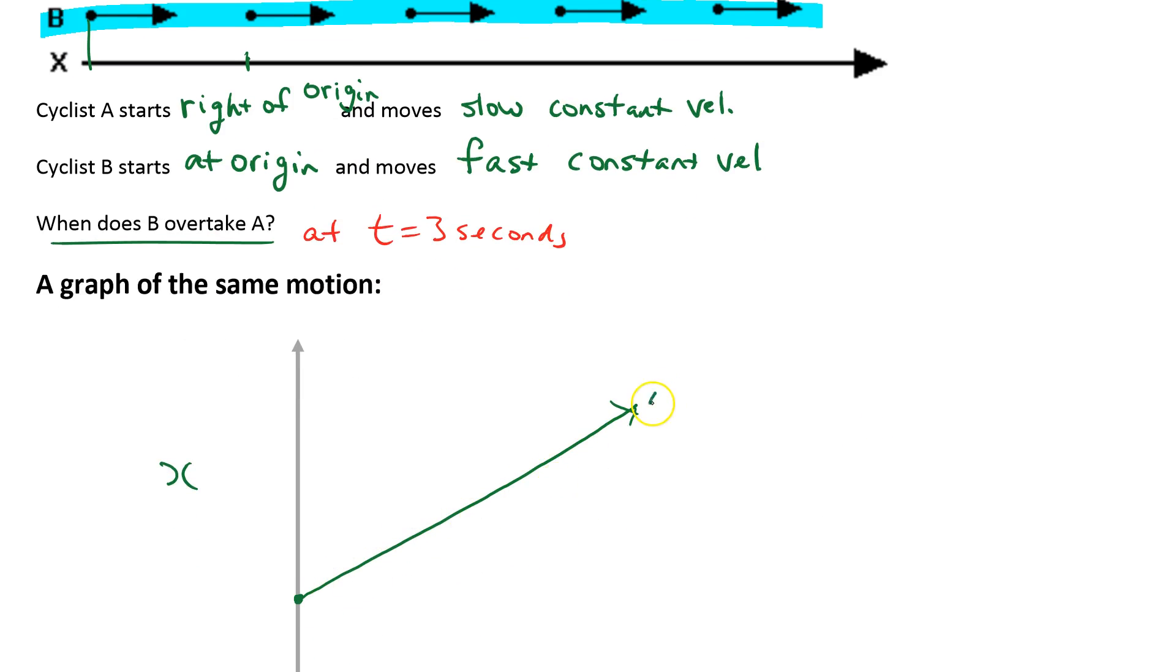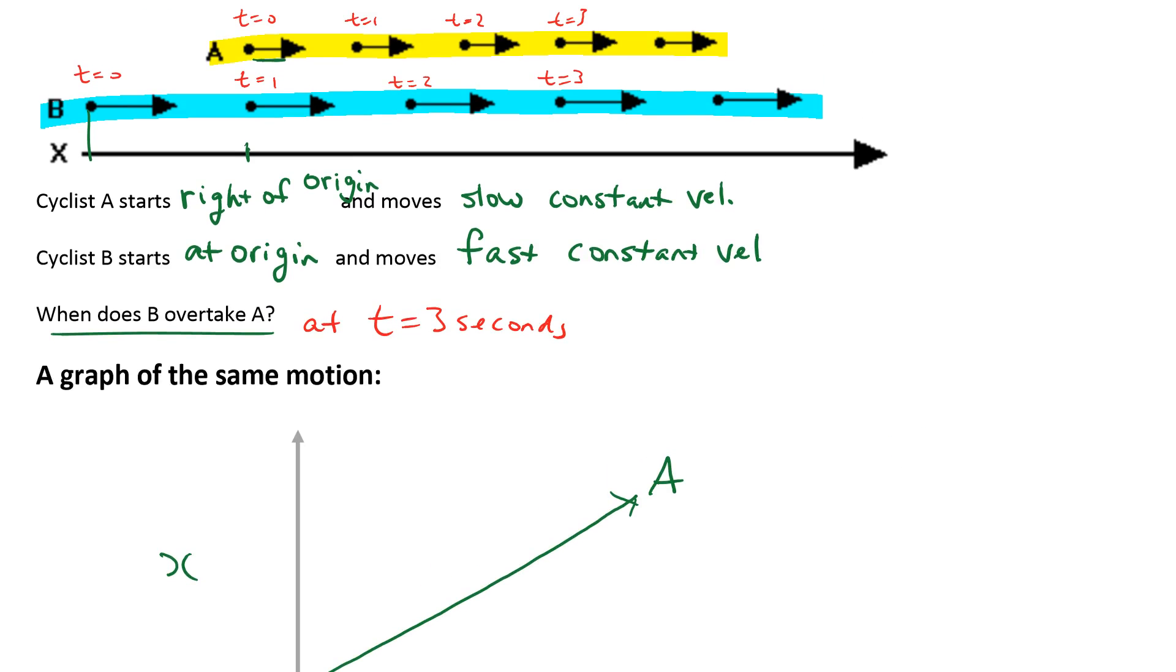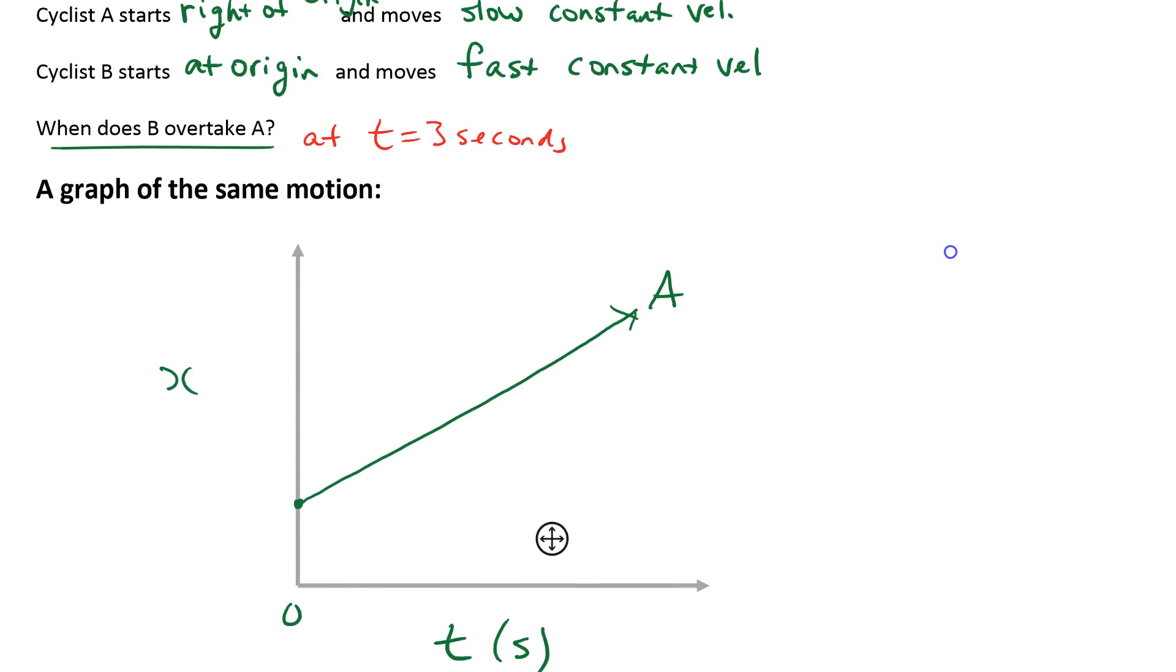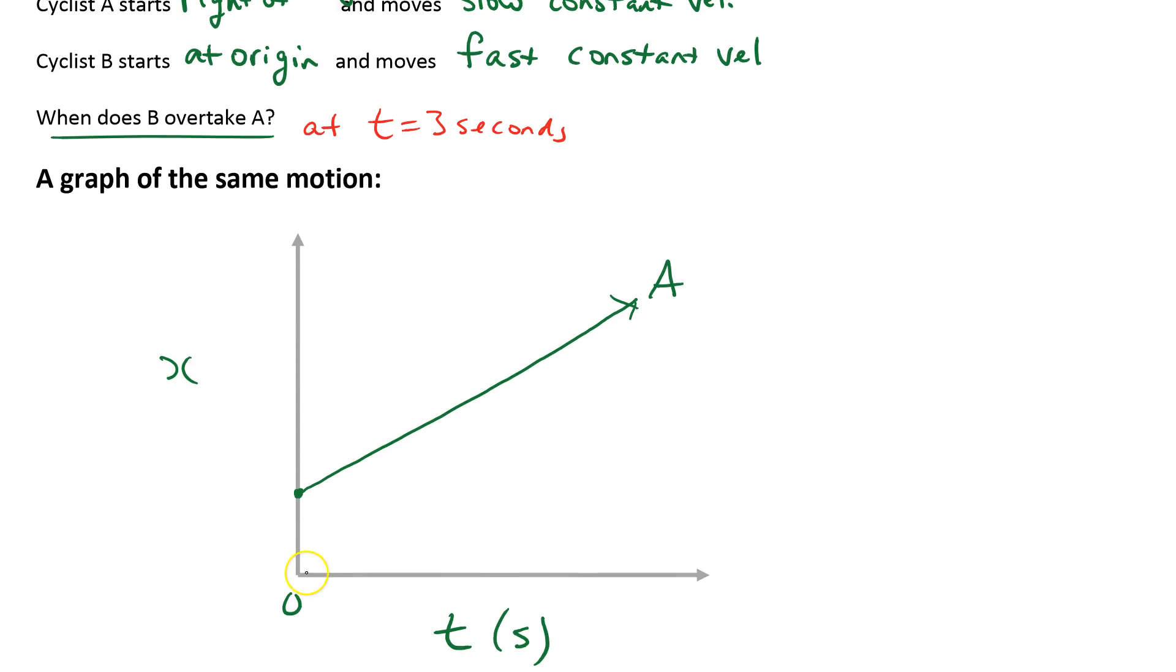This one is cyclist A. Now let's consider cyclist B. Cyclist B starts at the origin and goes faster. So it's going to start at the origin and it's going to go faster. And this is the interesting point at which they meet. And what time will that be? We already figured it out. That would be at three seconds.